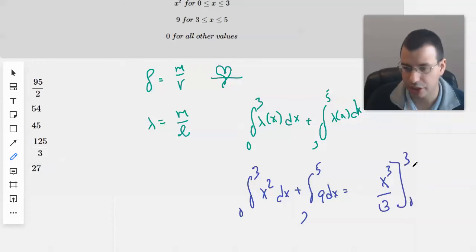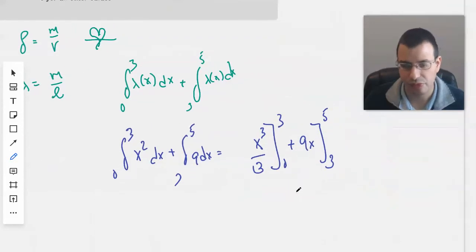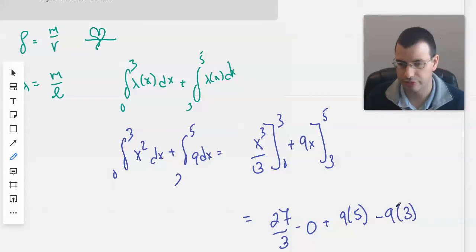From 0 to 3, plus 9x from 3 to 5, which gives us 27/3 minus 0 plus 9 times 5 minus 9 times 3.